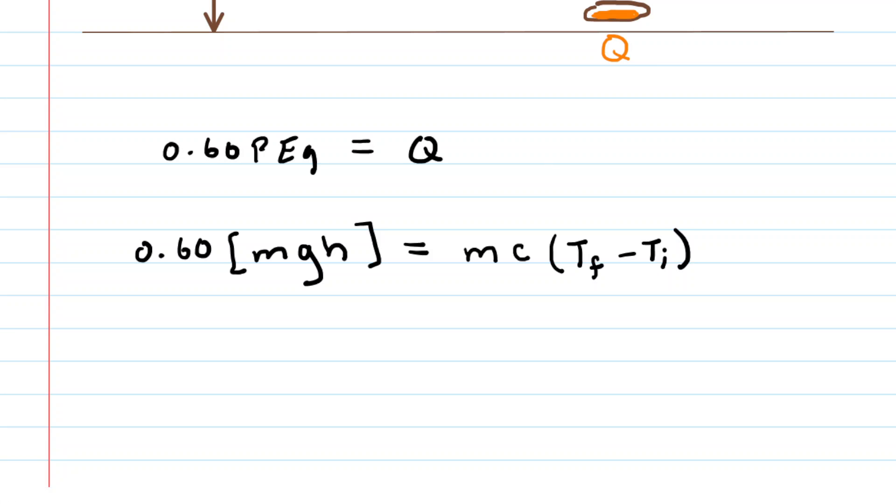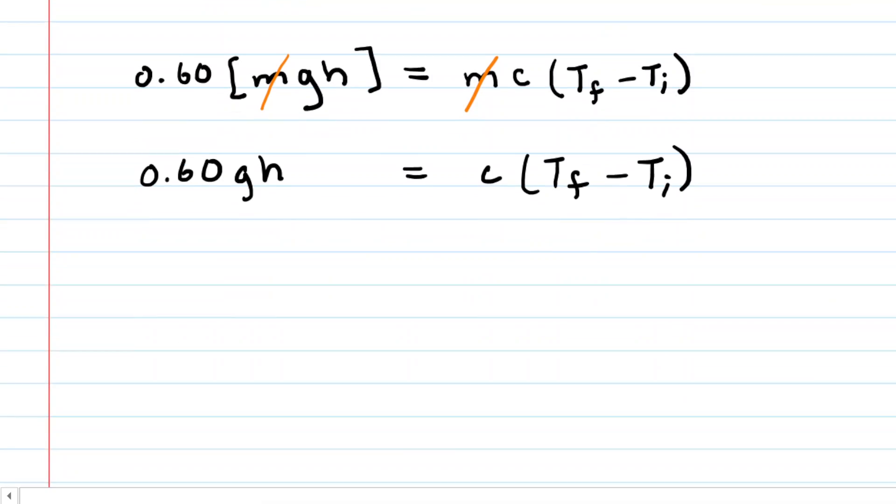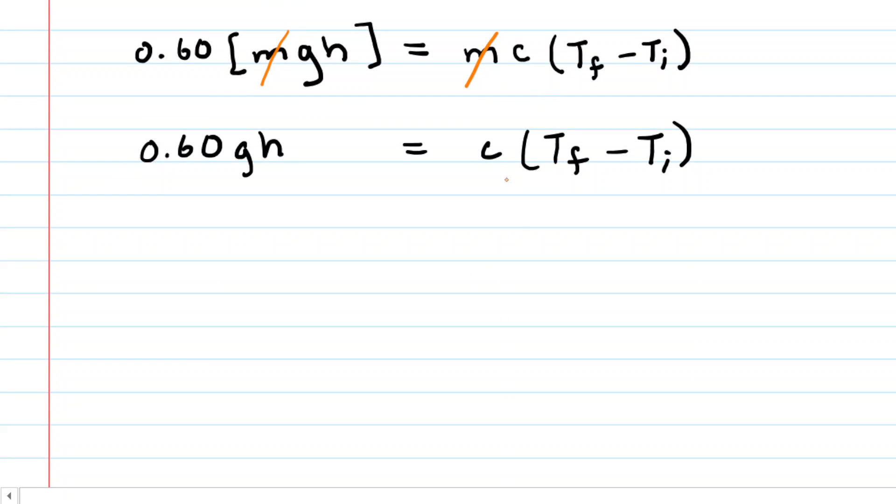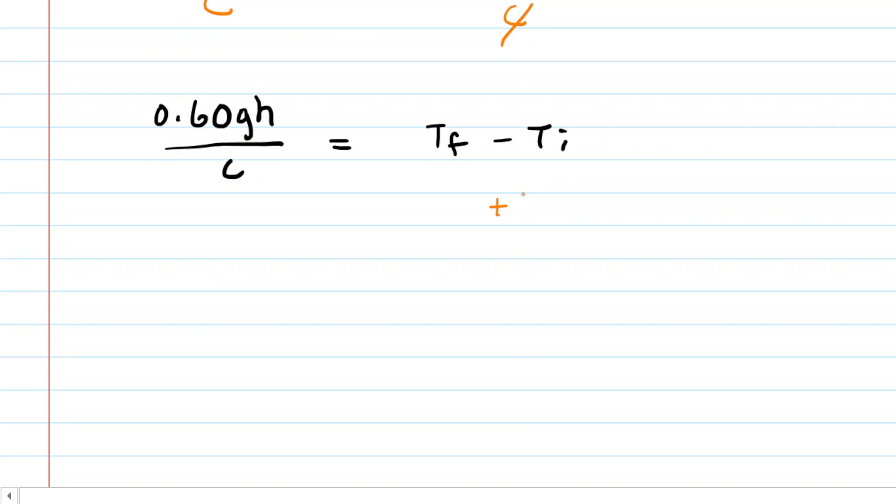Notice that the mass appears in both terms on each side of the equation. When you divide both sides by the mass M, it cancels out. We're solving for the final temperature of the coin, so we'll divide both sides by the specific heat of copper. Then we'll add the initial temperature to both sides.